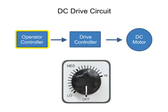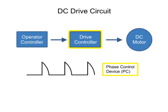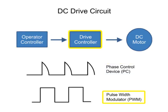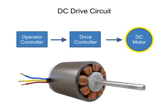One of the functions an operator controller provides is a method for altering the speed of the motor. The drive controller will regulate the input by means of either a phase control device or a pulse width modulator. And the DC motor can be an electrical device that needs to be adjusted to perform at various speeds.